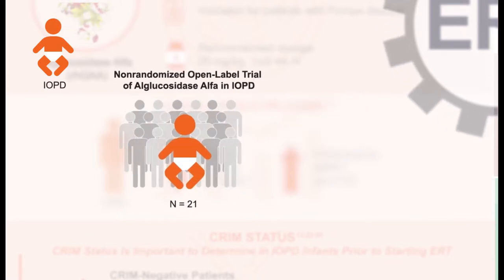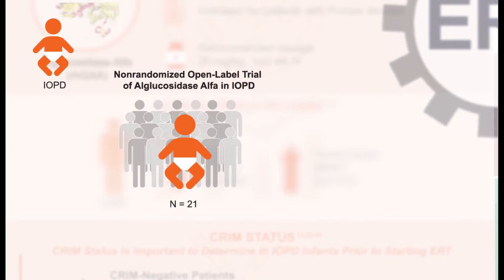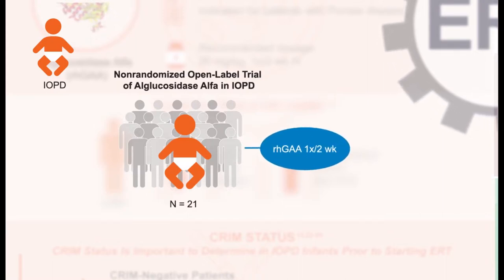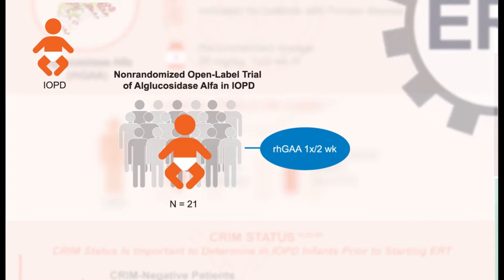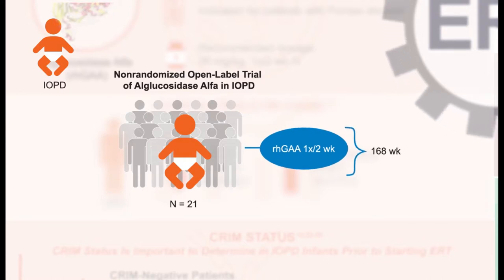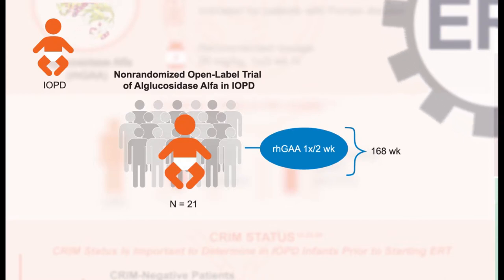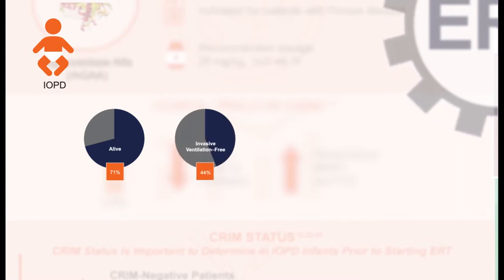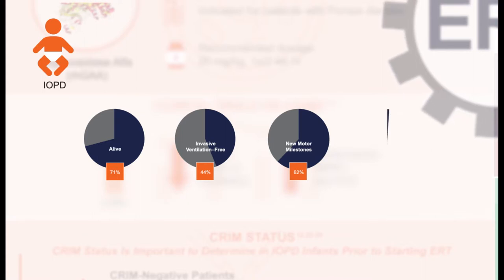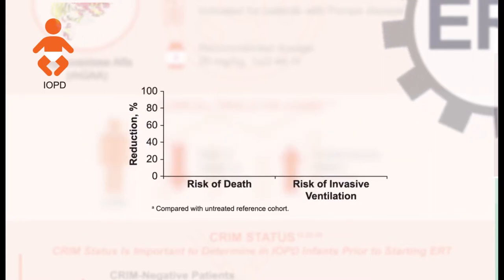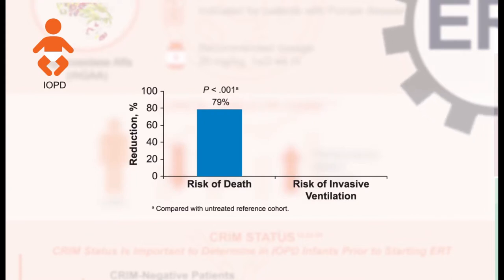Another non-randomized, open-label study of alglucosidase alfa in infantile-onset Pompe disease treated 21 patients who were 3 to 43 months of age, had minimal GAA activity, and had abnormal left ventricular mass index. Total treatment duration was up to 168 weeks, with a median of 120 weeks. At the end of the study, 71% of patients were alive, 44% were invasive-ventilator-free, 62% achieved new motor milestones, and 86% gained functional independent skills.